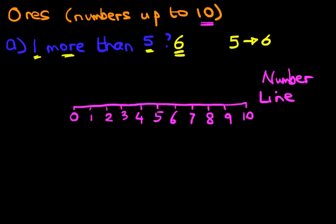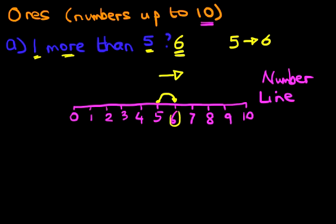So let's have a look at our question again: what is one more than five? We're going to start at number five — there it is. And because we're doing more than, we're going to go in this direction — we're going forwards — by one. So let's do one jump forward. There we go, that's one jump forward, and the answer is six. That's the same answer as before. So you can either count forwards or simply use the number line.